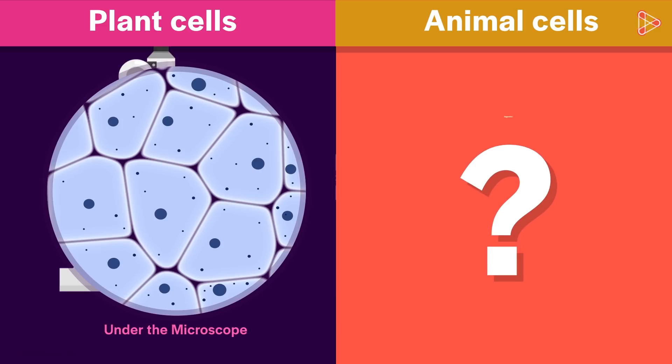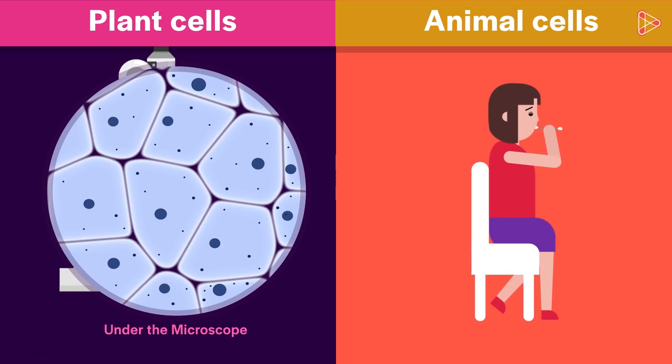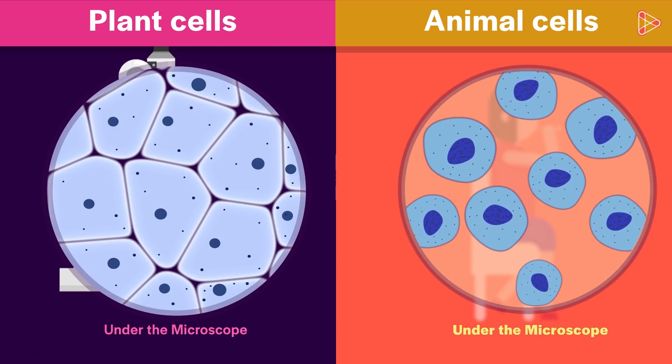Well, plant and animal cells are slightly different. When cells from a human cheek are scraped with a sterile cotton bud and mounted, similar but not exactly same cells are seen under the microscope.